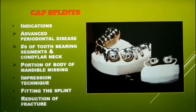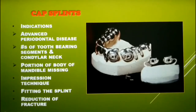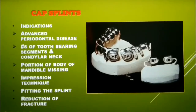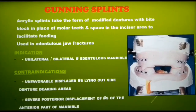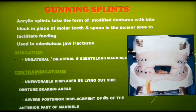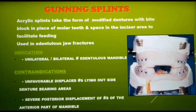Cap splints are indicated in fractures of tooth-bearing segments where the teeth are periodontally compromised, or where a portion of the body of the mandible is missing. A custom-made cap splint is fabricated using a specialized impression technique, then fixed to the mandible and fracture reduction is achieved. Gunning splints are used to reduce favorable and undisplaced fractures of the edentulous mandible. It is an acrylic splint in the form of a modified denture with bite blocks in the posterior region and an open space anteriorly to facilitate feeding. It is contraindicated in unfavorable or severely displaced fractures.